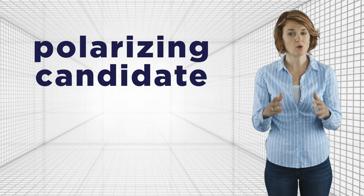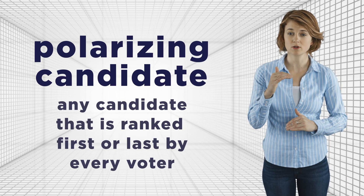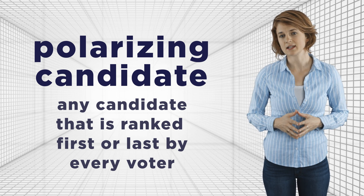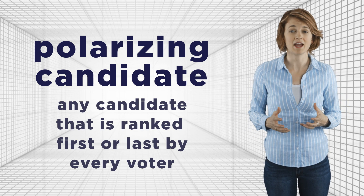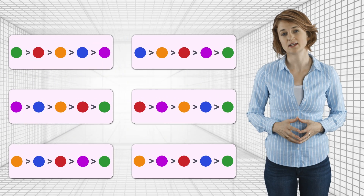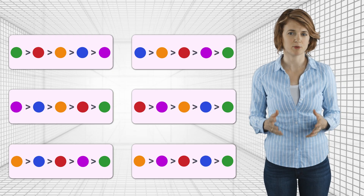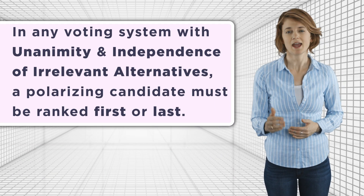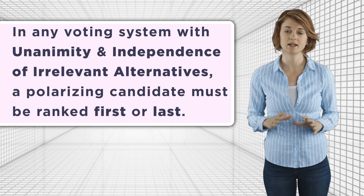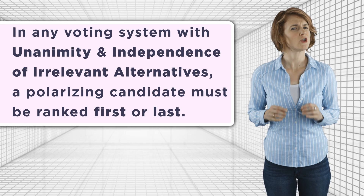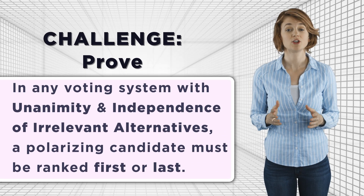Let's outline the proof of Arrow's theorem. We'll assume we're using a rank voting system that satisfies unanimity and independence of irrelevant alternatives. Using just those two properties, we want to prove that the rank voting system must be a dictatorship. First, we need to introduce a new term: define a polarizing candidate as any candidate that is ranked first or last by every voter. We need to introduce a polarizing candidate because they'll help us test the extremes of any voting system. In any voting system with unanimity and independence of irrelevant alternatives, a polarizing candidate must be ranked first or last in the overall ranking. Your challenge problem for the week is to prove this fact using just those two properties.